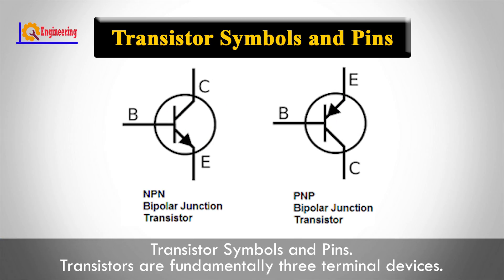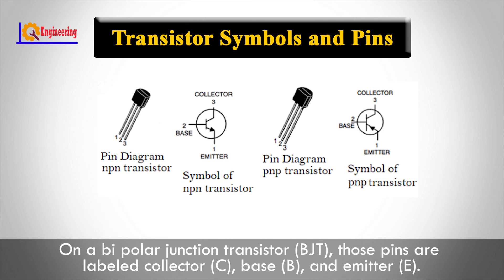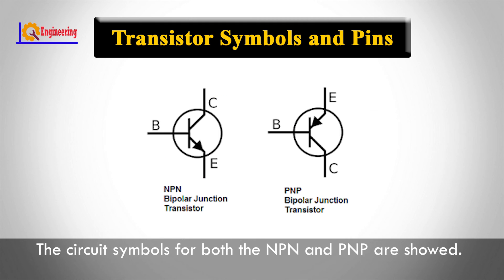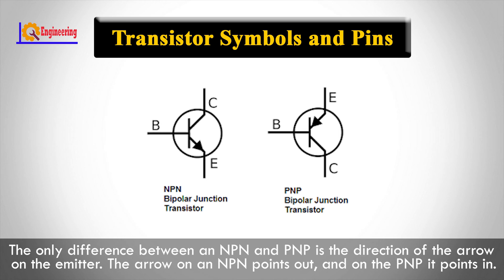Transistors are fundamentally three-terminal devices. On a bipolar junction transistor, those pins are labeled Collector, Base, and Emitter. The circuit symbols for both the NPN and PNP are shown. The only difference between an NPN and PNP is the direction of the arrow on the emitter. The arrow on an NPN points out, and on the PNP it points in.